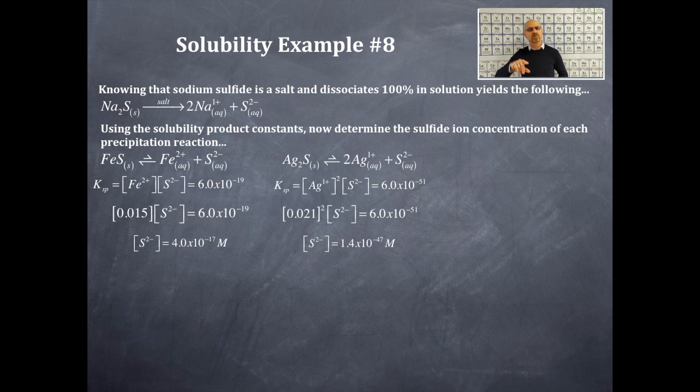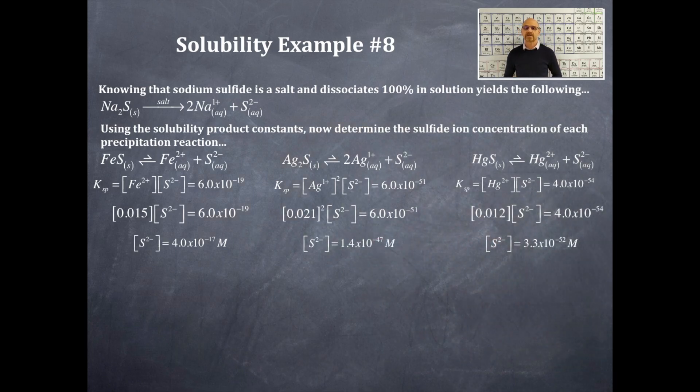All right, got that one, one more to do, and that is the mercury 2 sulfide, and I get a mercury 2+ ion and a sulfide ion. That's a one-to-one ratio there of those two ions. Okay, it gives me this KSP, that is mercury 2+ and sulfide 2-. 4.0 times 10 to the negative 54 is the KSP. I have the mercury ion concentration of 0.012, and I'm going to solve for the sulfide ion concentration. So, the sulfide ion concentration is 3.3 times 10 to the negative 52 molar.